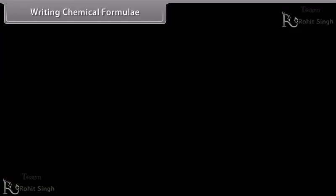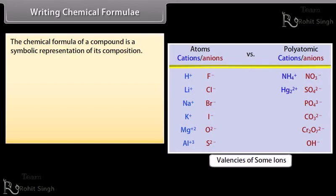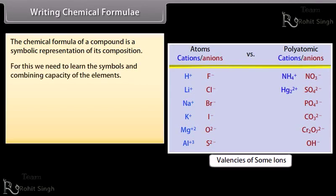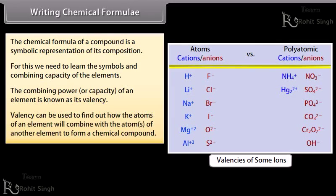The chemical formula of a compound is a symbolic representation of its composition. For this, we need to learn the symbols and combining capacity of the elements. The combining power or capacity of an element is known as its valency. Valency can be used to find out how the atoms of an element will combine with the atoms of another element to form a chemical compound.